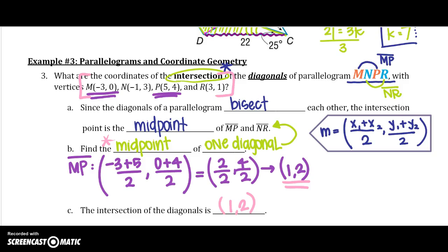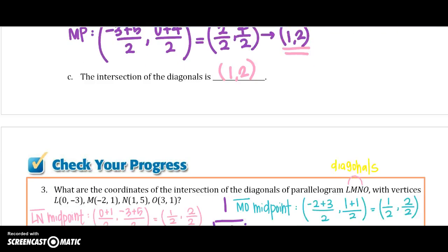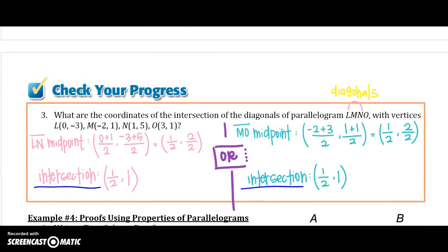Alrighty, before you get started with your check your progress, if you will put the midpoint formula again on this page in the right hand corner, right above your check your progress. Let's stop this video and do your checkpoint. As we look over this, I actually did both of them. And you can see that both diagonals are actually intersecting at the same point. They have the same midpoint.